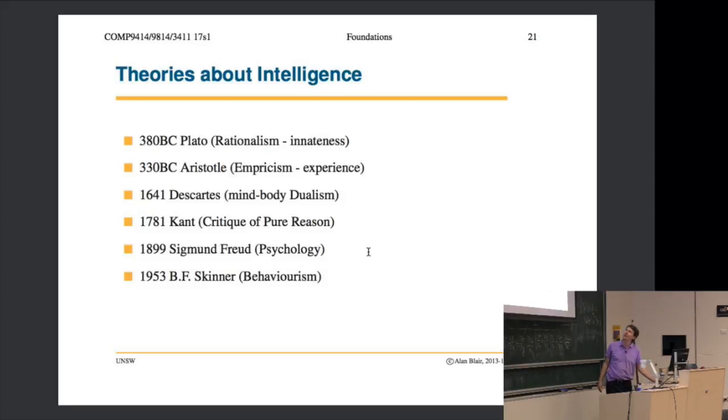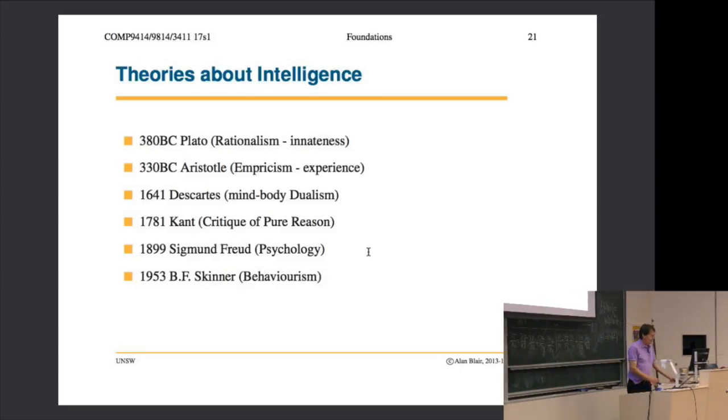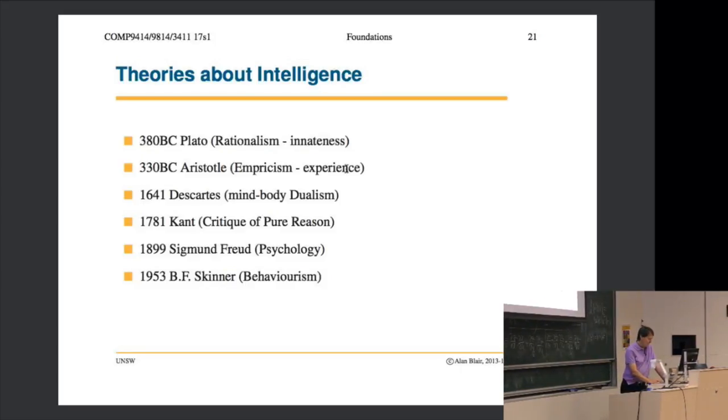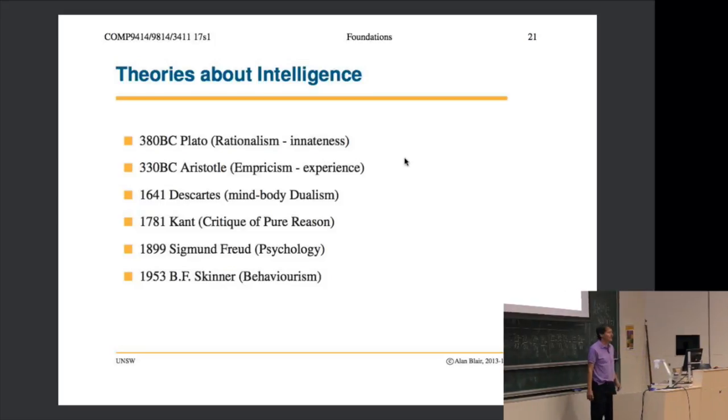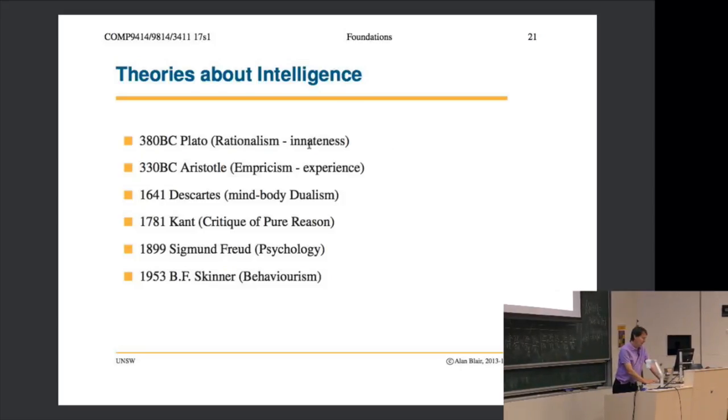If we track this historically, philosophy goes back to the ancient Greeks. There was this ongoing struggle between rationalism and empiricism. Rationalism says that a lot of thinking is born into us genetically, and empiricism says no, we start out with nothing and then we learn from experience.